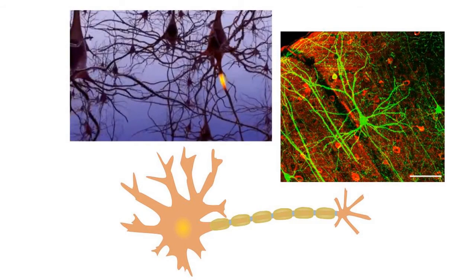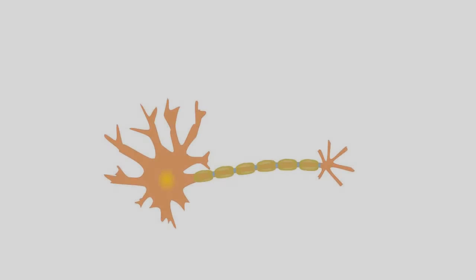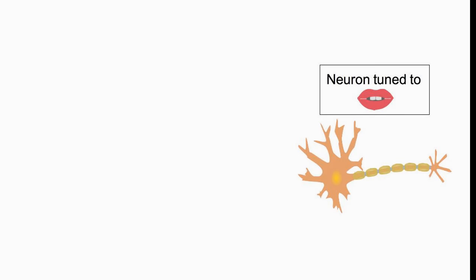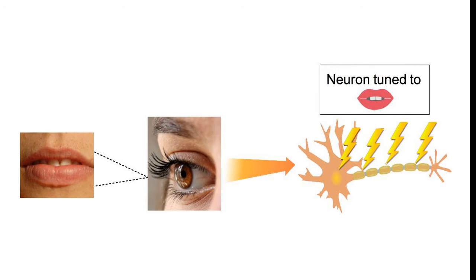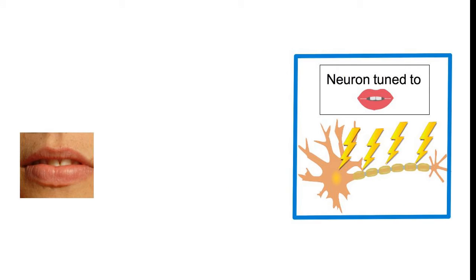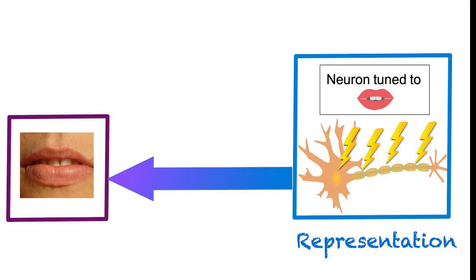The brain is composed of connected cells called neurons. A neuron is tuned to a particular thing and fires rapidly when that thing is present. For example, a neuron tuned to the shape of a mouth fires when you see a mouth. We will say that a rapidly firing neuron is activated. Neural activity is a representation inside the brain of the world outside the brain.